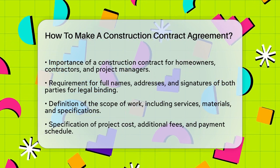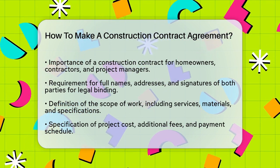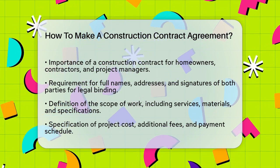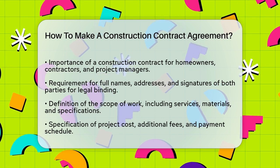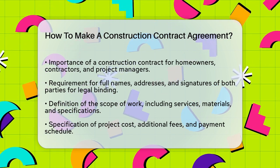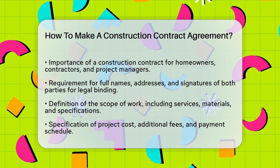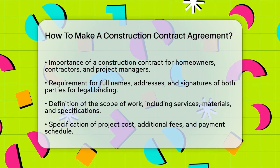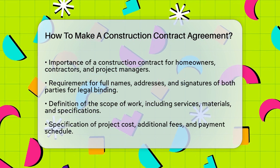Next, you need to clearly define the scope of work. This section should detail exactly what services will be provided, including descriptions of materials, quality, grade, and any other specifications relevant to the project. For example, if you're renovating a house, the scope of work should outline what rooms will be renovated and what materials will be used.